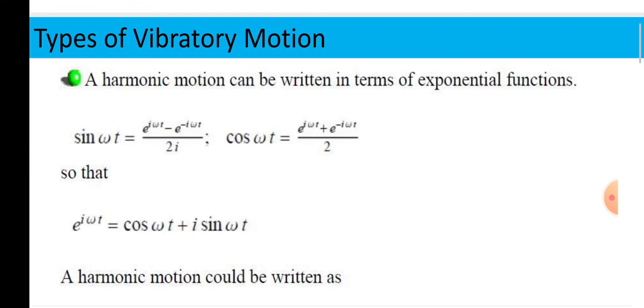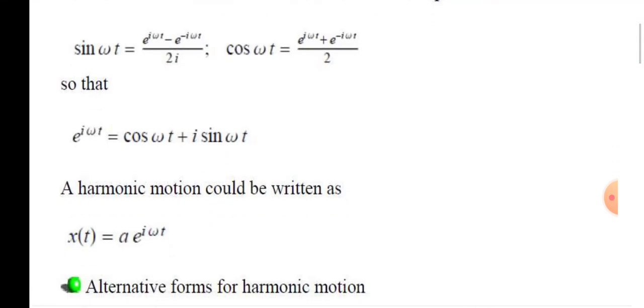Look at sin omega t and cos omega t. It is quite easier. In sin omega t that is minus sign, while in case of cos that is positive sign. So, after simplifications we get e raised to i omega t equals cos omega t plus i sin omega t. So, harmonic motion can be written as x of t equals A e raised to i omega t.